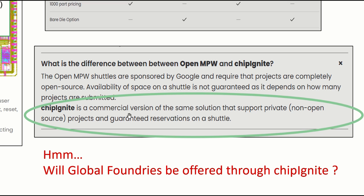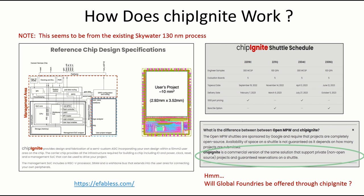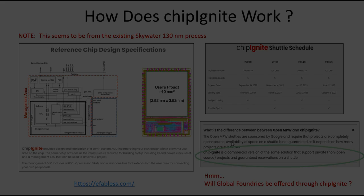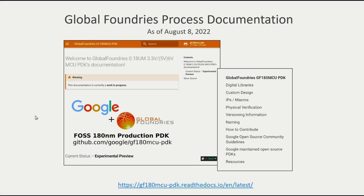Chip Ignite is a commercial version of the same solution that supports private projects and guaranteed reservations on a shuttle. One question I have: will Global Foundries be offered through Chip Ignite? Or is Global Foundries only going to be available through the Google initiative, which would require you to release your designs as open source? I don't know the answer to that. So this stuff is open source — let's delve in and look at the process itself.